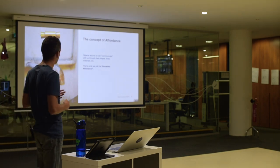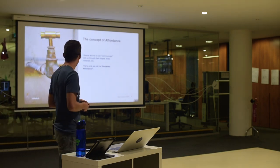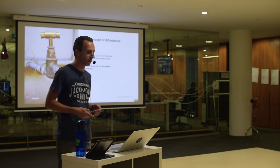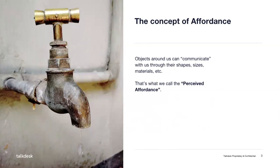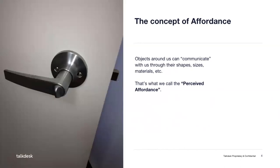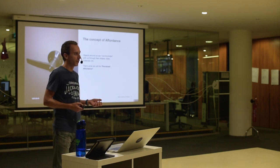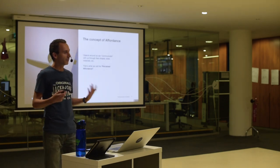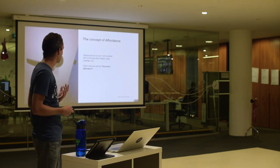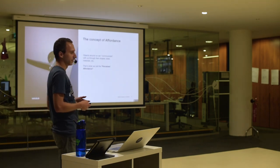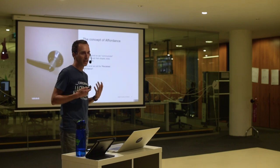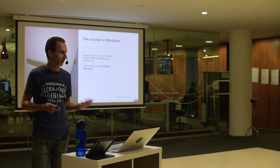Objects around us can communicate with us through their shape, size, and the material they're made of. For example, if you look at a faucet, you don't have to read the instructions to know how to use it — you just look at it and the object speaks for itself. Just turn it and the water comes out. Same with a doorknob — you look at it and you think, okay, this should do something like this, and it does. This is what we call perceived affordances. Sometimes without reading anything, objects just tell us what they do.